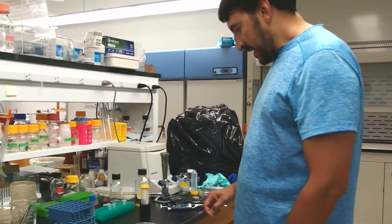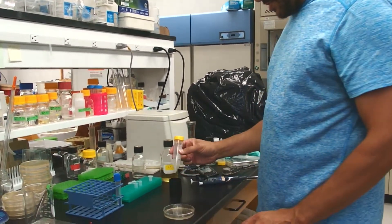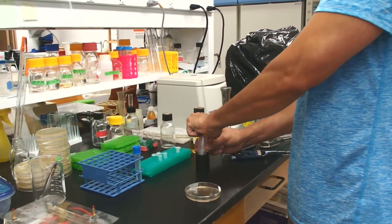I'm going to show you how to inoculate mini preps with a single colony from a transformation. The first thing we have to do is prepare some LB broth with a desired antibiotic.